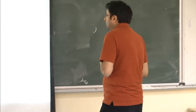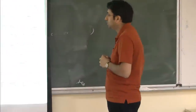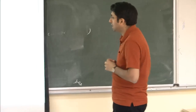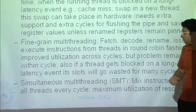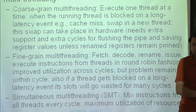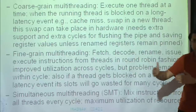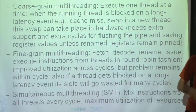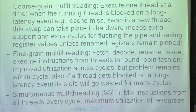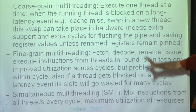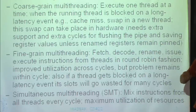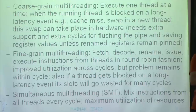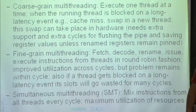The next improvement is fine-grained multi-threading. You fetch, decode, rename, issue, execute instructions from threads in a round-robin fashion. This cycle I'll fetch and execute instructions from thread one; next cycle from thread two, and so on, cycling through the threads. No new resources are introduced — just a single pipeline. I'm just switching the program counters to determine what instruction gets injected into the pipeline. Every cycle, I'll be switching the program counter.